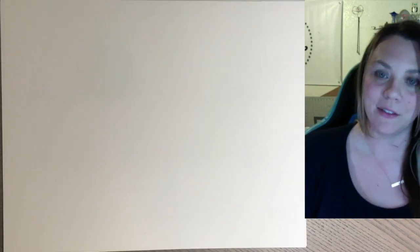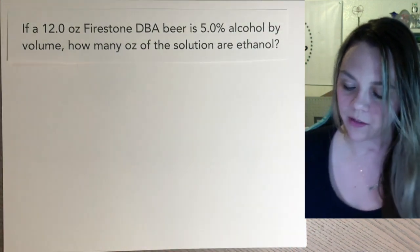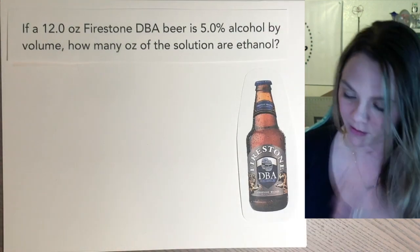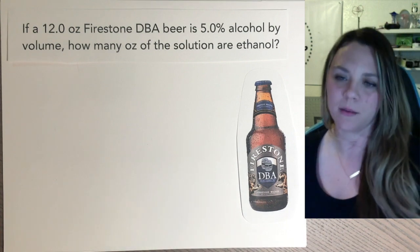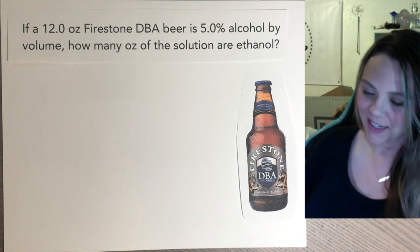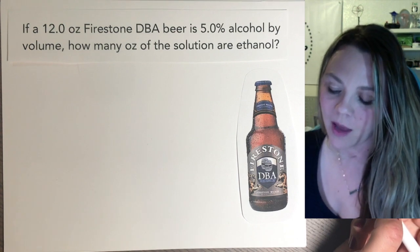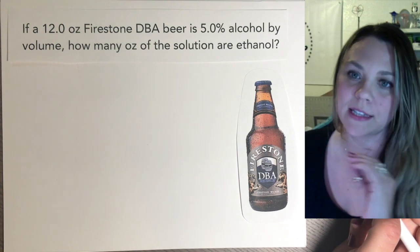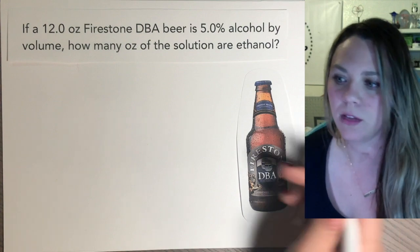So if you have a 12-ounce Firestone DBA — the best beer ever, in my opinion — and that is 5% alcohol by volume, how many ounces of that solution is actually ethanol? Ethanol is alcohol.